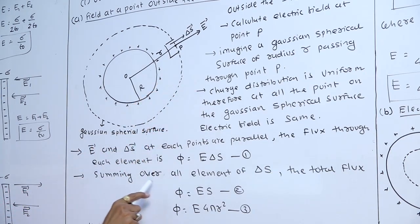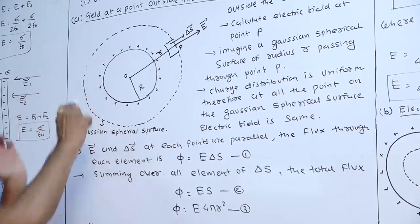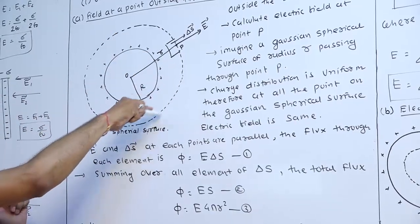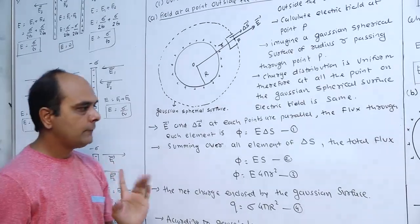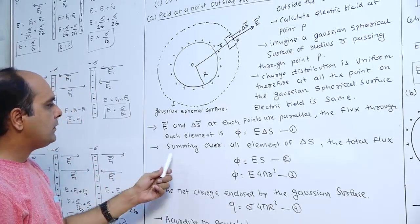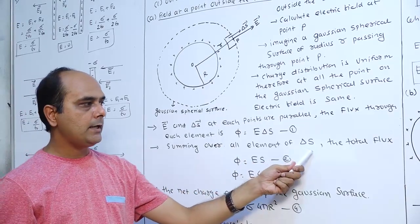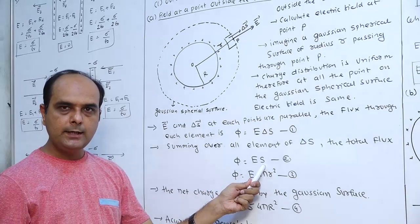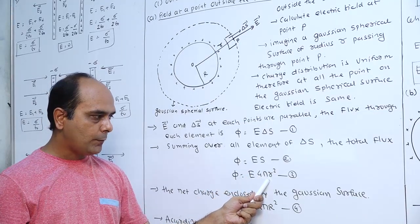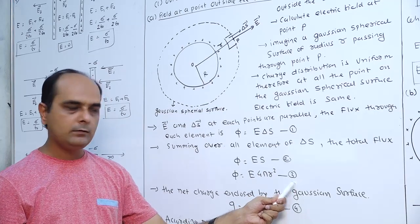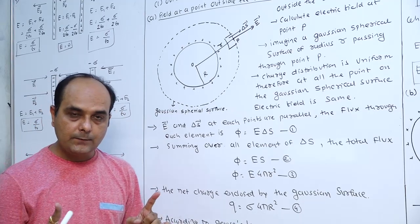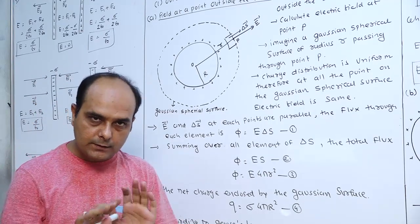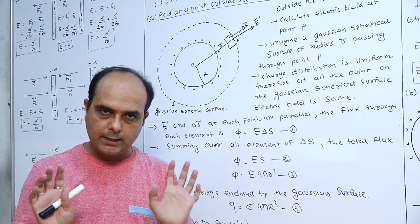Summing over all elements of delta S gives the total surface area of the sphere, which is 4 pi r squared, equation 3. Therefore, the total flux phi equals E into 4 pi r squared, equation 3. This completes the first equation: phi equals vector E dot delta S.